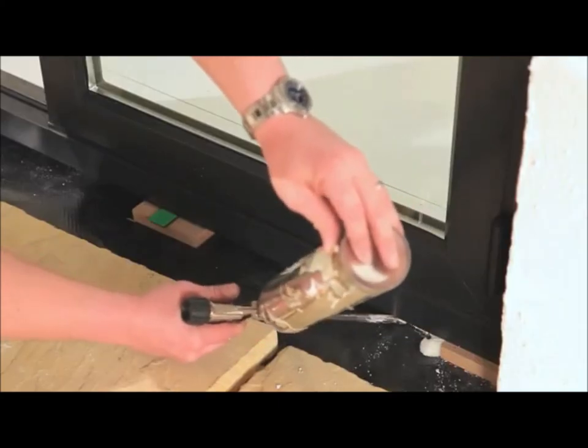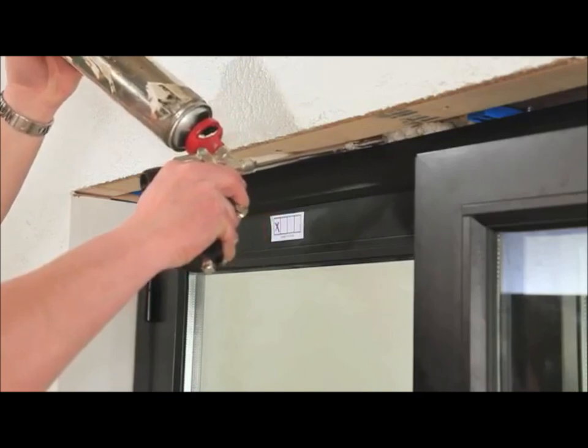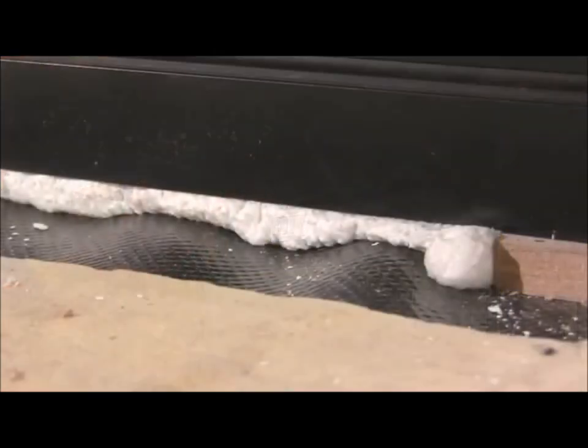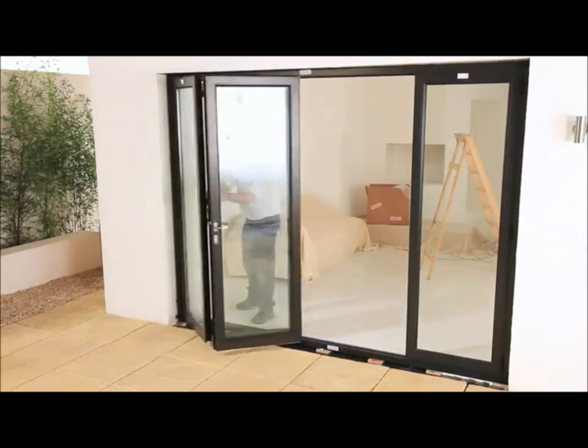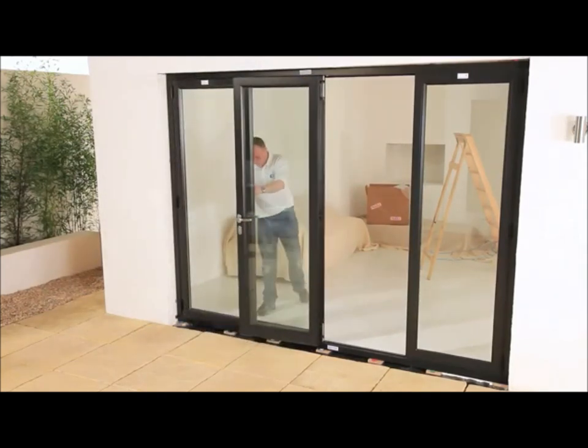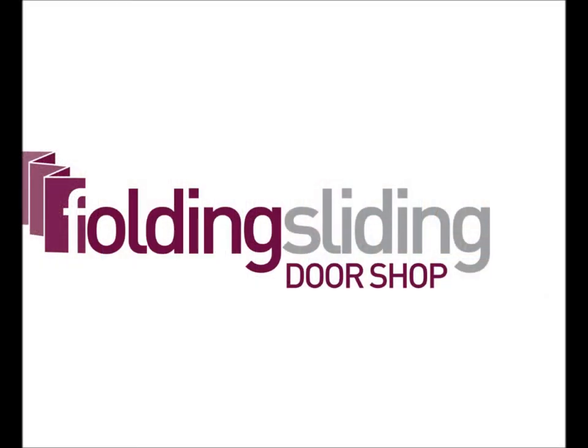Finally, we recommend expanding foam is used in all four sides of the outer frame. Your Origin doors are now correctly installed. Before using, please refer to the operation and maintenance instructions included in the box.